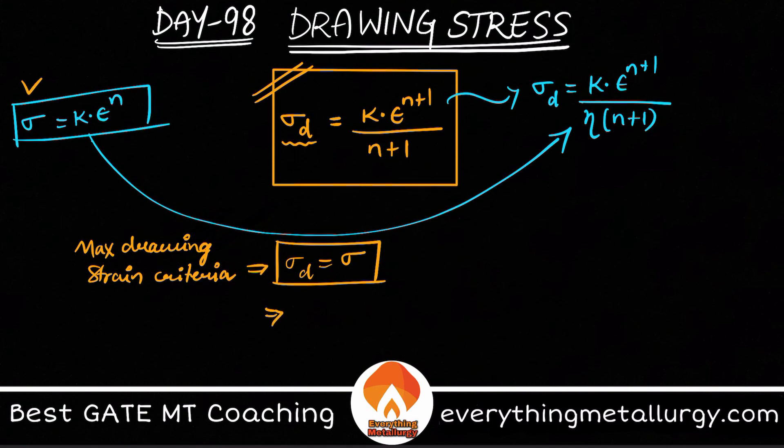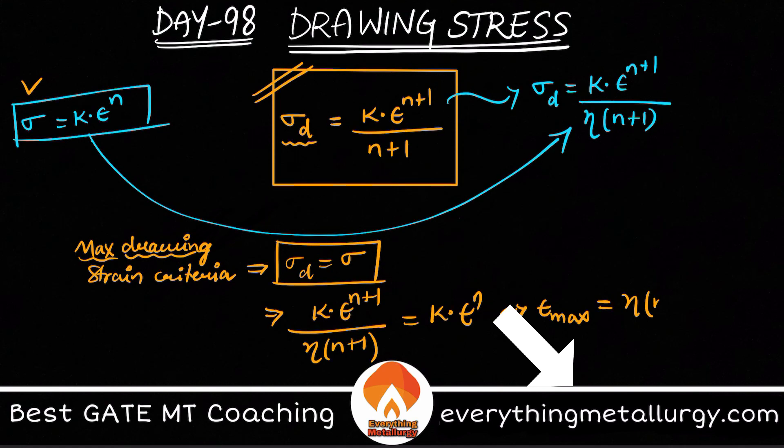So just putting both of them, K into epsilon power n plus 1 by eta into n plus 1 is equal to what we have on the other side, K epsilon power n. So if you just remove all this stuff, you get the maximum drawing stress. Let me call it sigma max.